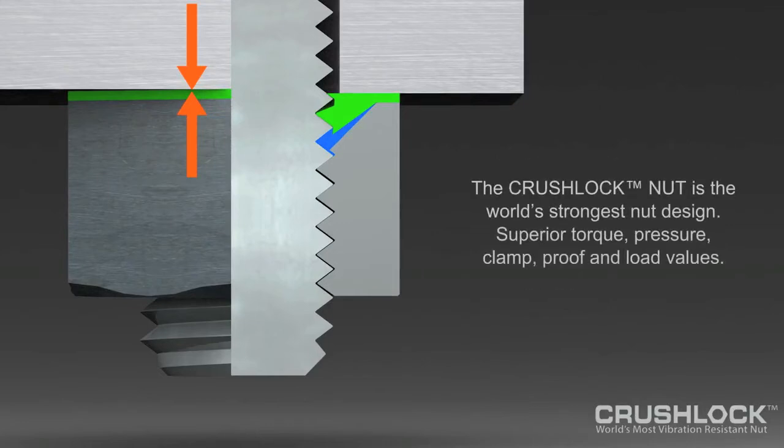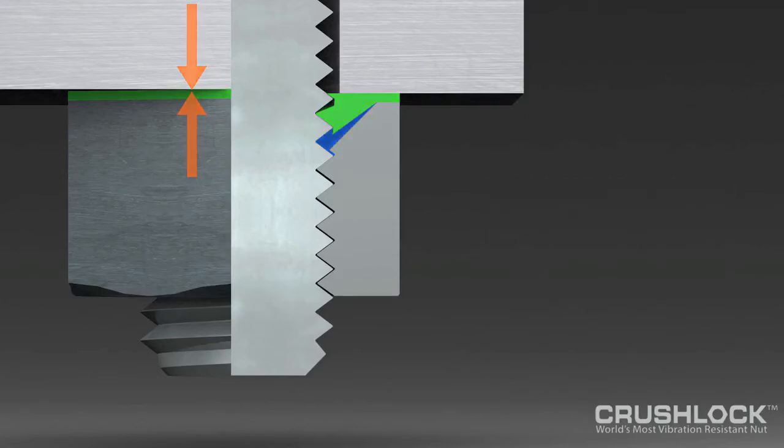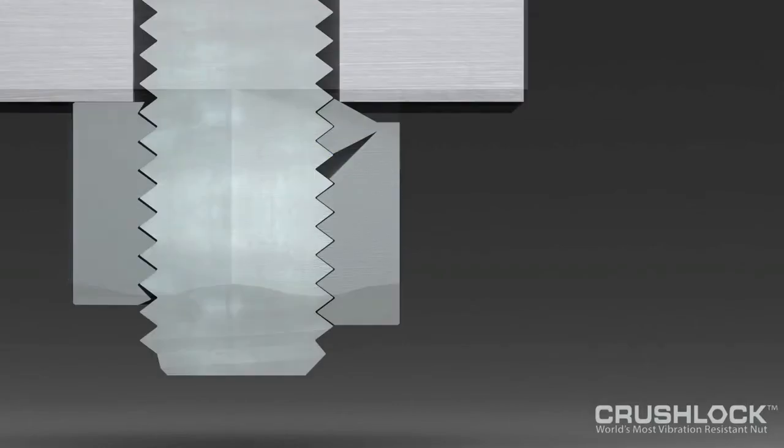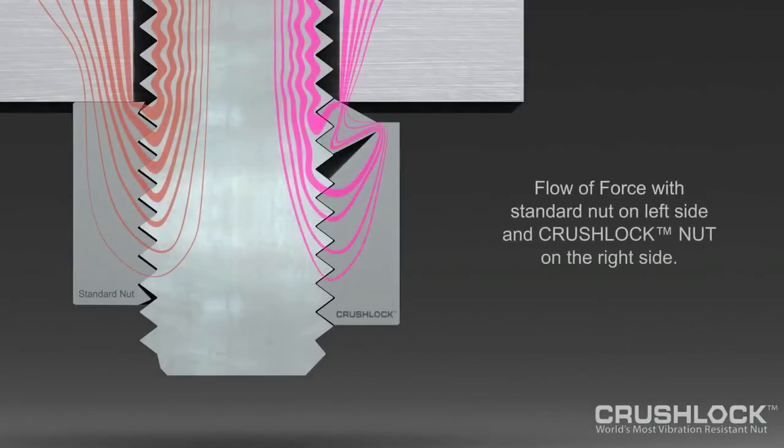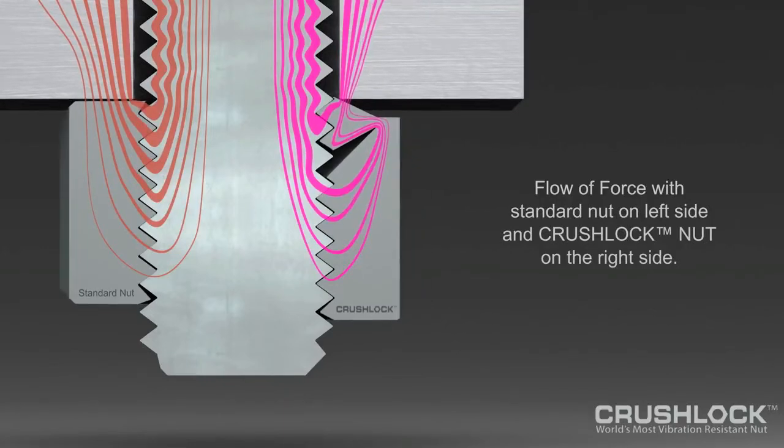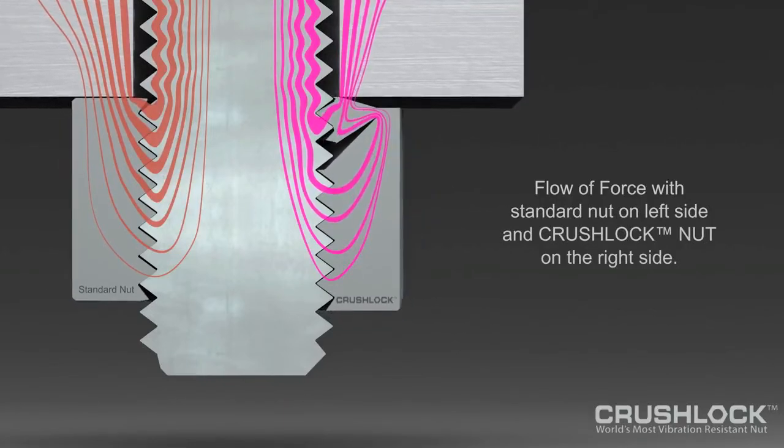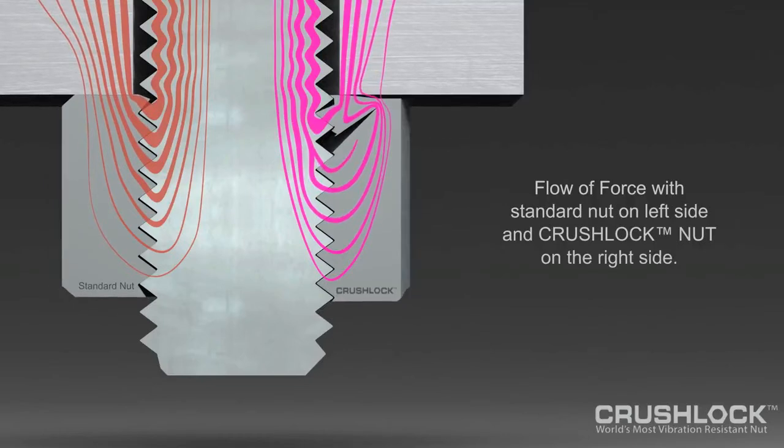Laboratory tests show that when Crushlock Permanent Nut was over-torqued during installation past the point of nut failure, it would still retain its pressure and remain bolted. In other words, Crushlock Permanent Nut continues to function and hold pressure even after nut integrity failure. All other nut fasteners on the market today would violently release pressure and fall off once nut integrity fails.